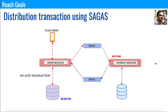Now let's take the happy path. The user places an order, it goes to the order service, and the order gets created. This time, funds are available for the customer, so a reverse message is sent back to the order service saying it is approved. The "created" state becomes "approved", and you can fulfill the order. That is how the whole distributed transaction works using the Sagas design pattern.